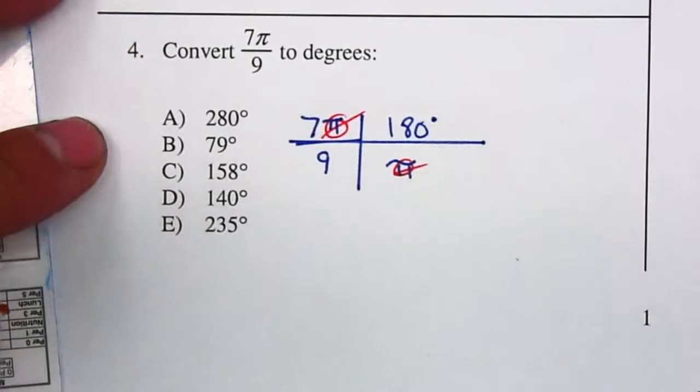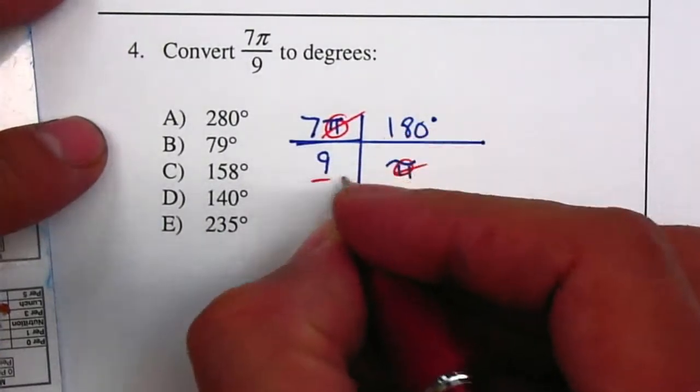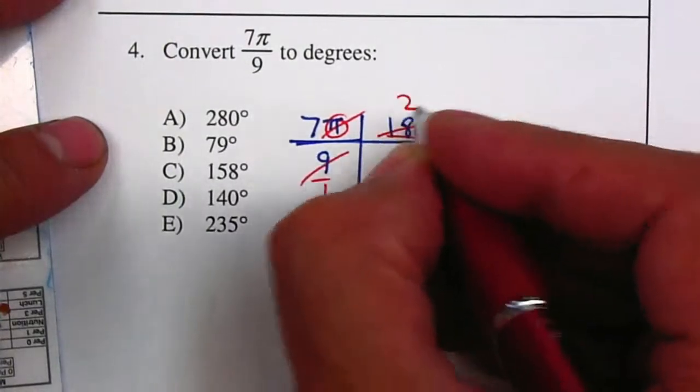And I can reduce the fraction before I multiply. I can divide the 9 and the 180, I can divide by 9, so it gives me 1, and this gives me 20.